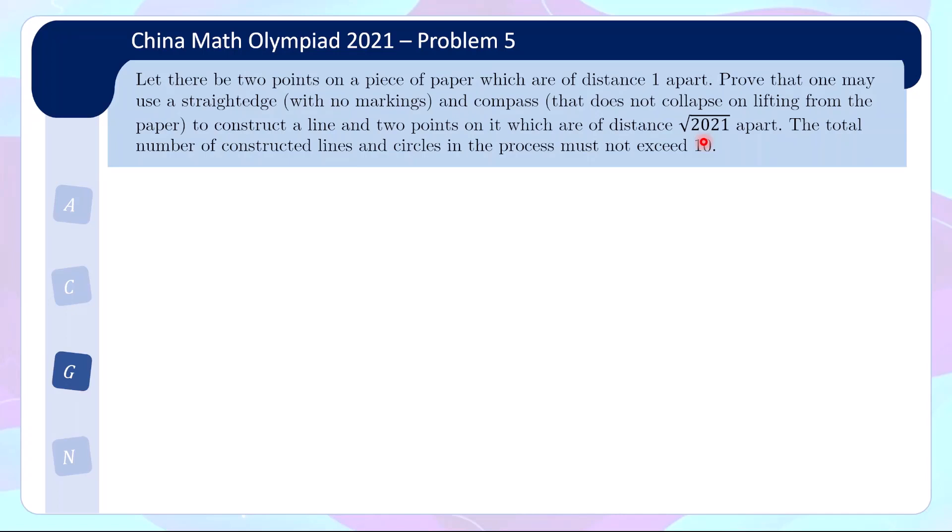The key observation for this problem is that 2021 can be written as 43 times 47, but basically this gives us 45² - 2². This suggests that √2021 can be constructed by creating a right angle triangle where the hypotenuse is 45 and the base is 2, then the height would be √2021.